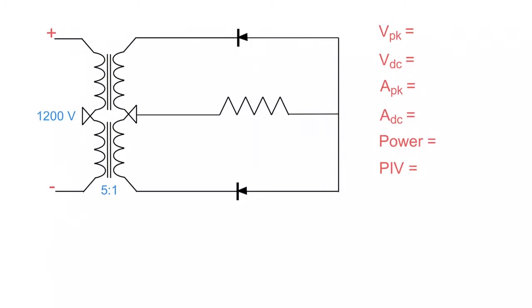So to see how this really works, we're going to assign some values. We're going to figure out what our peak voltage is at the load, what our DC voltage is at the load, what our peak current will be at the load, what our DC current will be at the load, the power being dissipated across the load, and what our peak inverse voltage needs to be for these diodes.